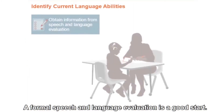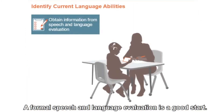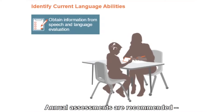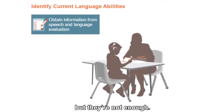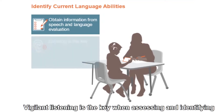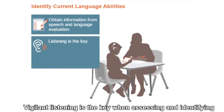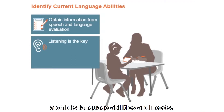A formal speech and language evaluation is a good start. Annual assessments are recommended, but they are not enough. Vigilant listening is the key when assessing and identifying a child's language abilities and needs.